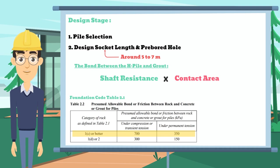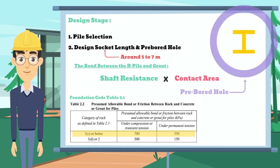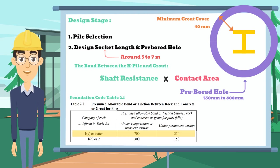For the contact area between the rock and grout, it depends on the radius of the pre-bored hole. For the typical case, the diameter of the pre-bored hole is around 550 to 600 mm, which is to ensure an adequate size to enable the insertion of the steel H-Pile and allow a minimum grout cover of 40 mm to the pile. Therefore, a 550 mm pre-bored hole is the most economical option to fulfill the requirement.